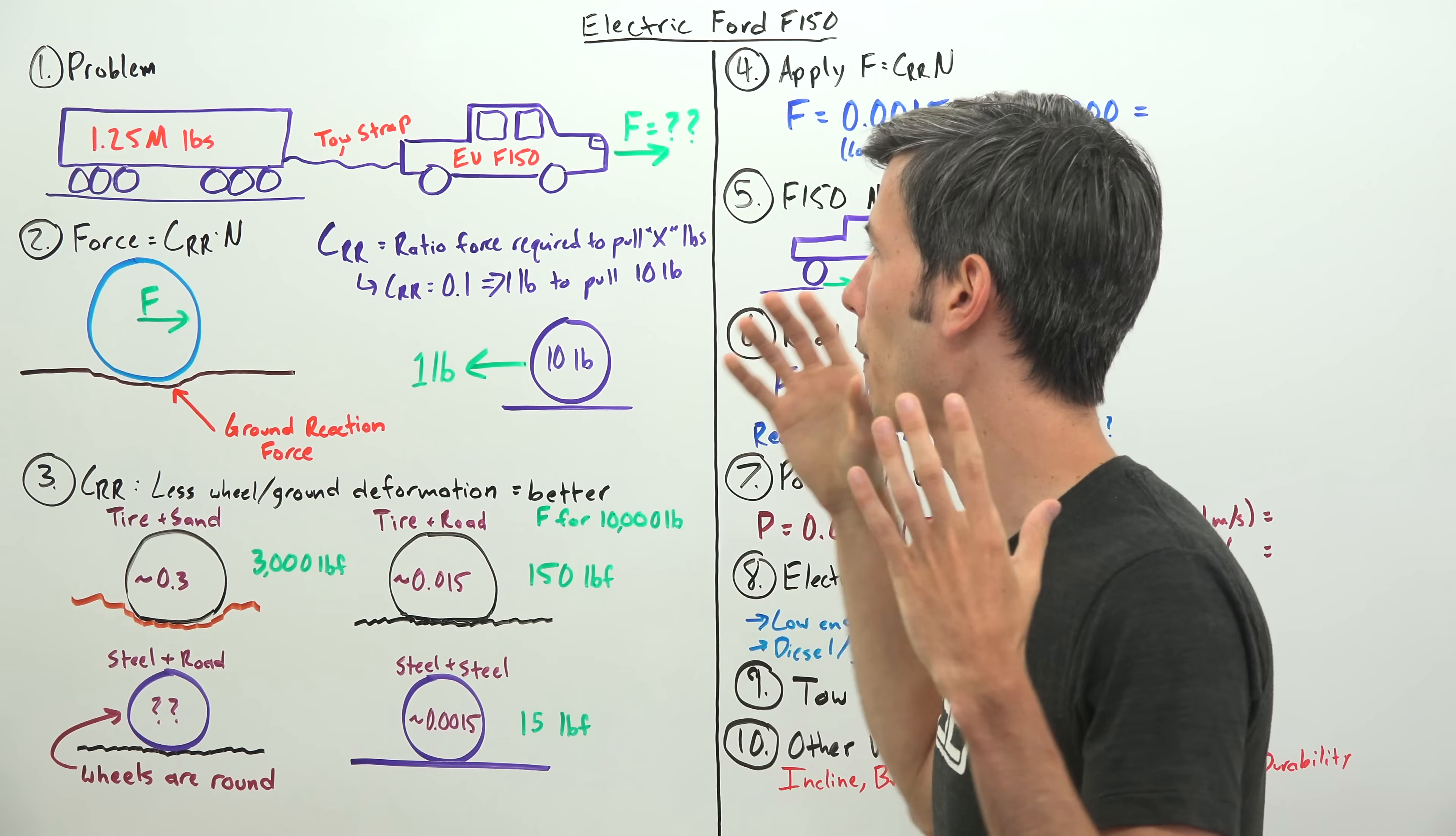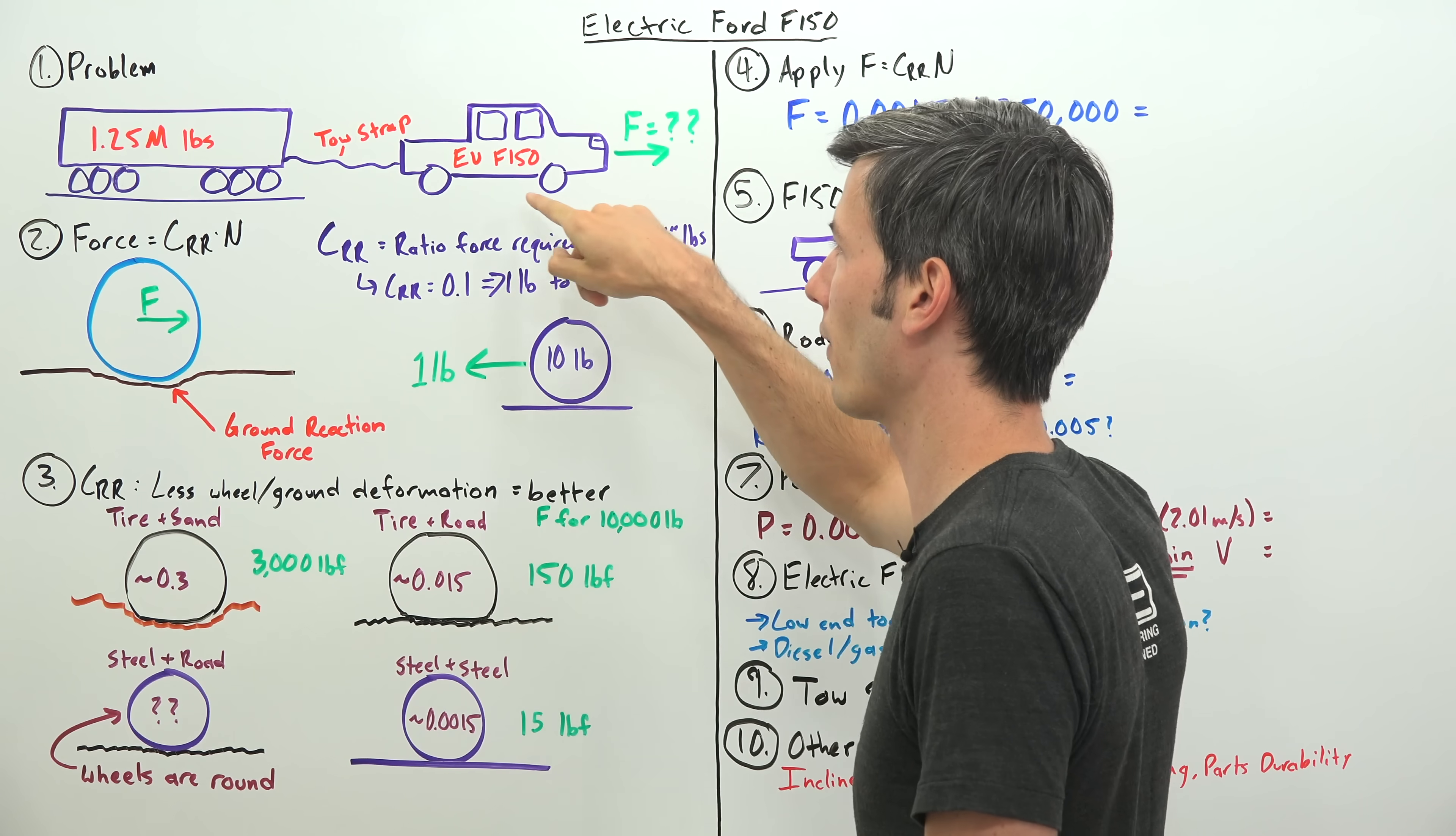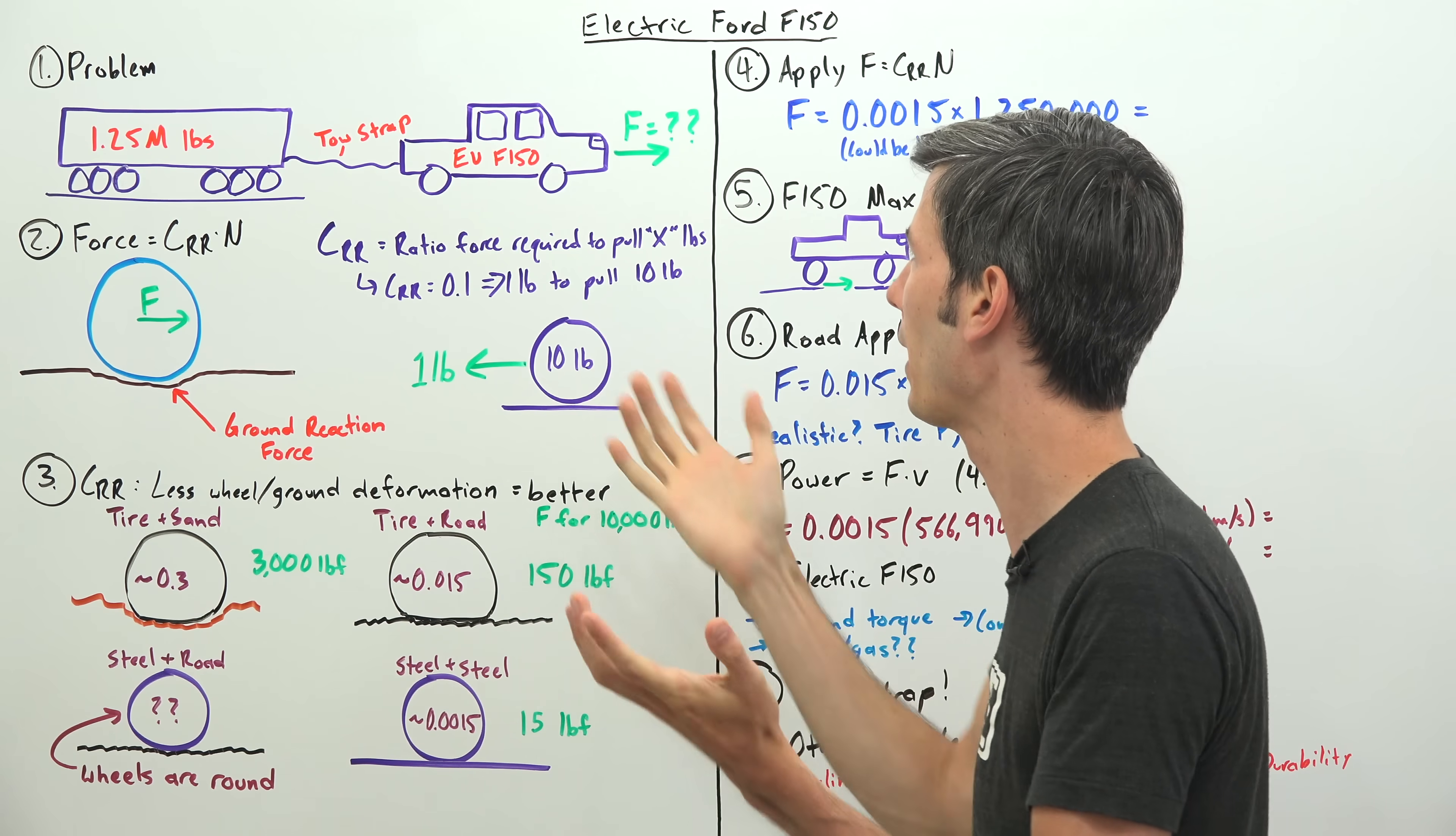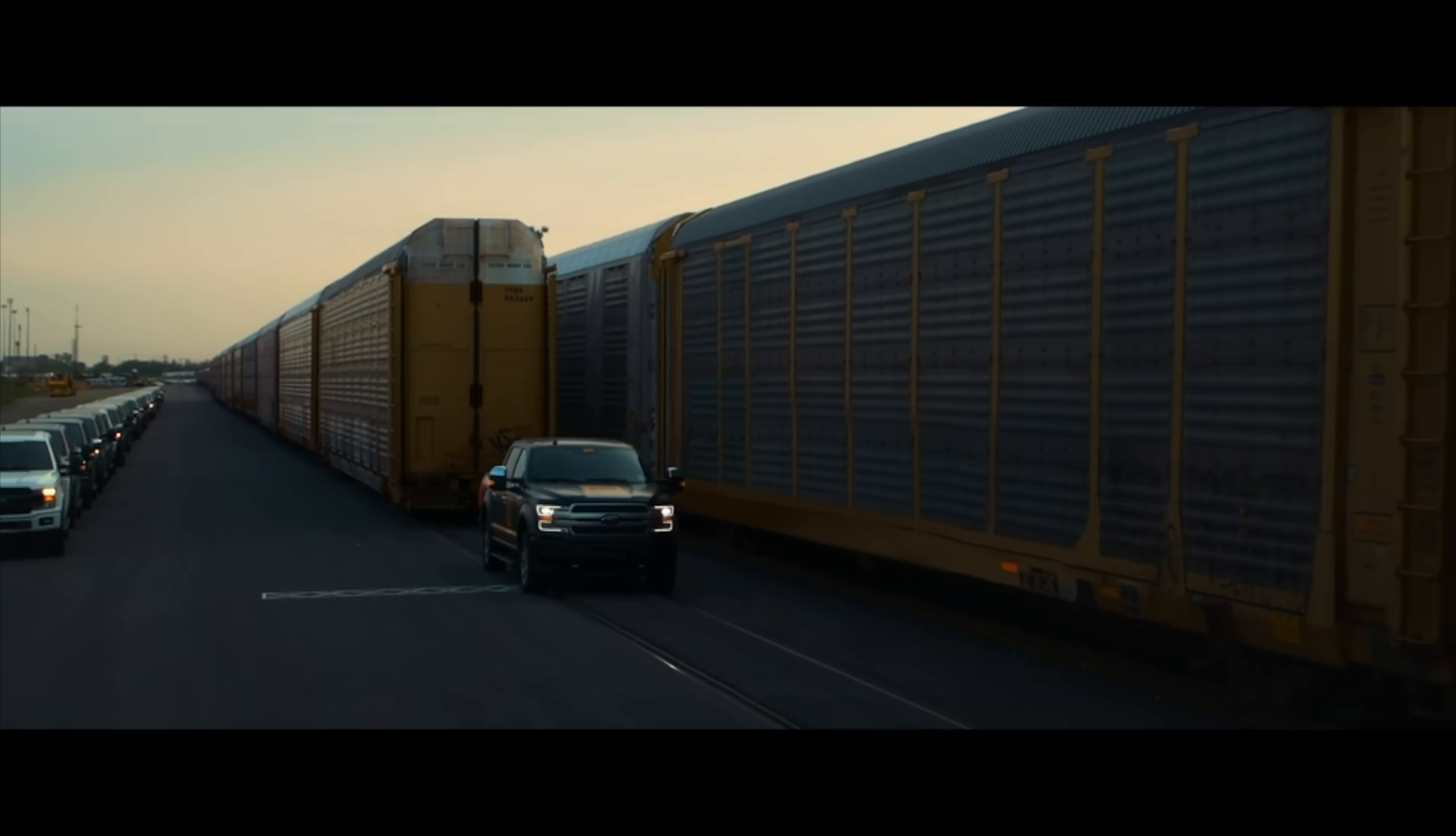So you're probably wondering, what is the insanely high force required to pull this 1.25 million pound load? Our problem here is trying to figure out what is the force required to move this load. We have an electric Ford F-150, and for this video we're going to assume it has four-wheel drive. We have a tow strap going back to the load, which is 1.25 million pounds.